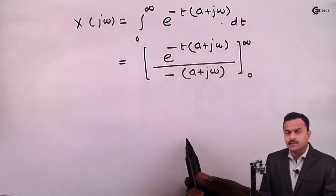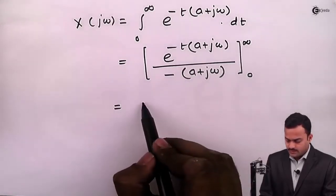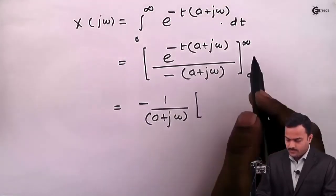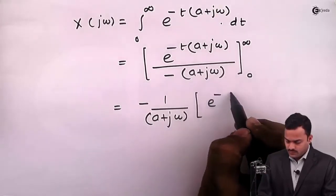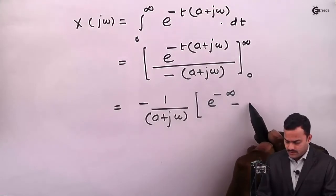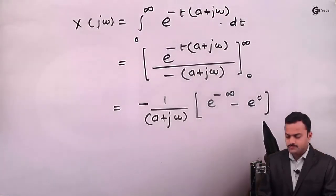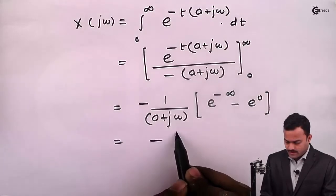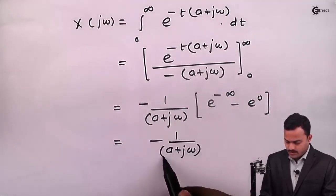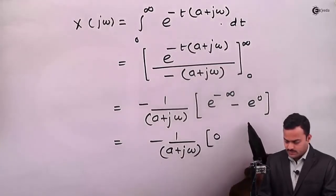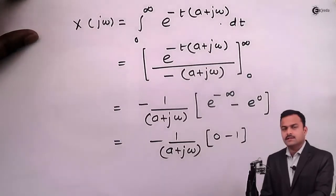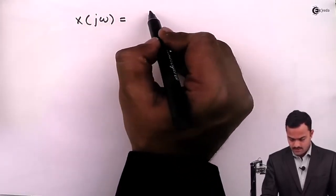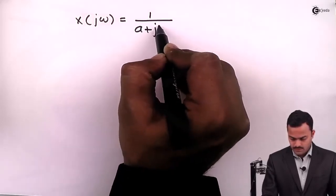Let's apply the limits now. First, let's take the constant outside. Applying the limits, we will have e raised to minus infinity minus e raised to 0. So we get minus 1 upon (a plus j omega); e raised to minus infinity is 0 and e raised to 0 is 1. Therefore X(jω) equals 1 upon (a plus j omega).